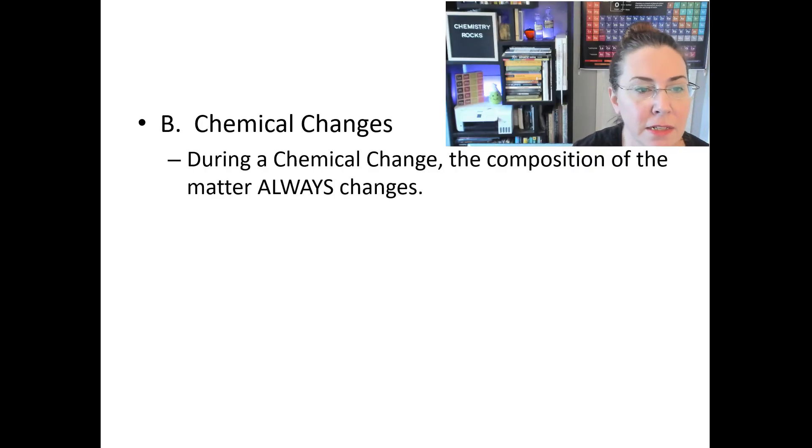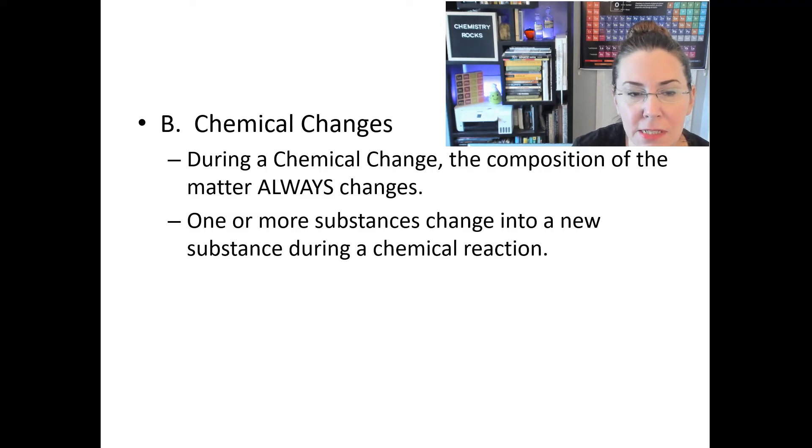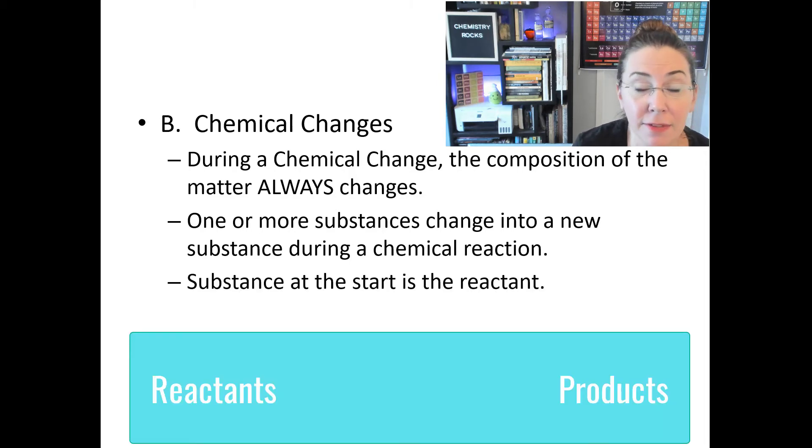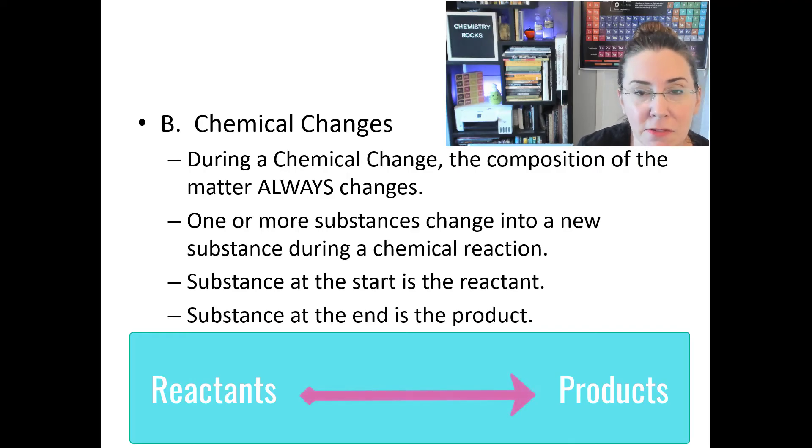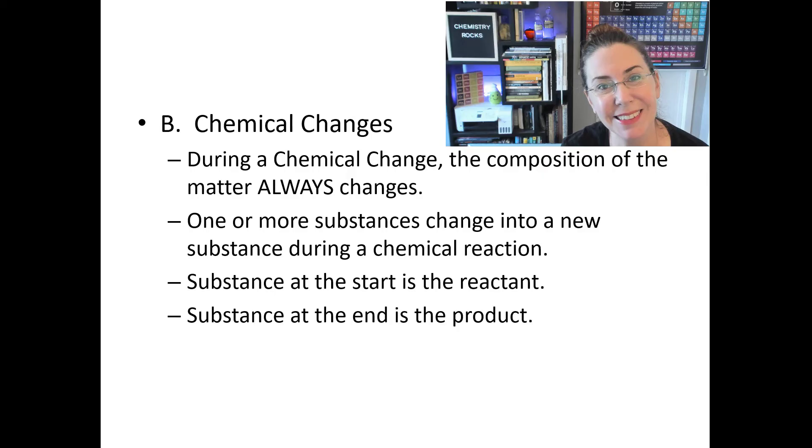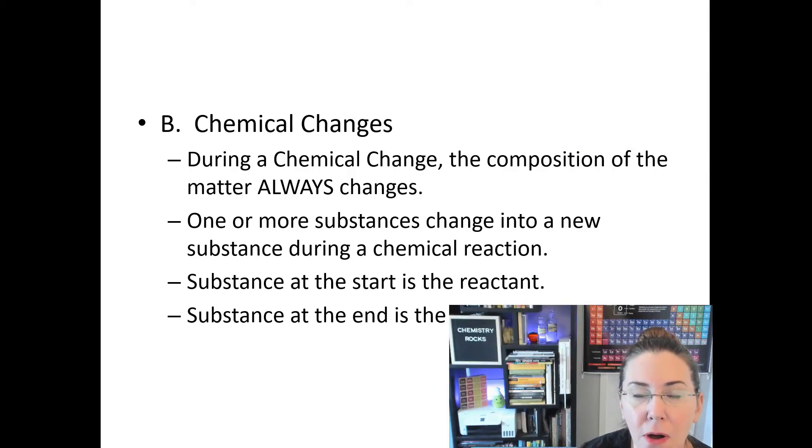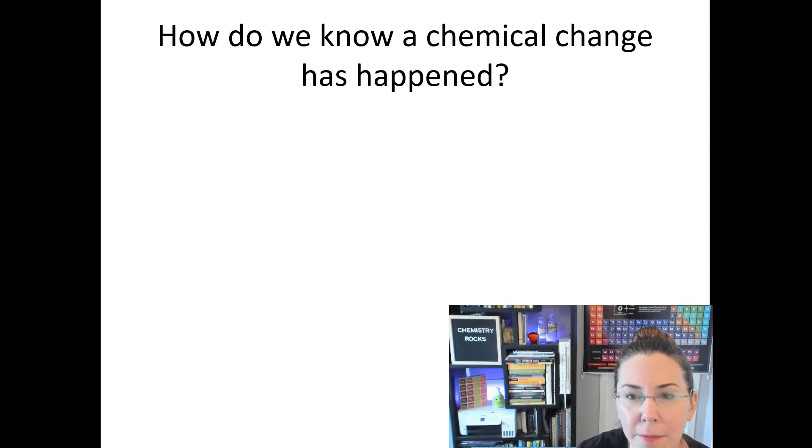Chemical changes, on the other hand, are very different from physical changes. During a chemical change, the composition of our matter always changes. One or more substances here are going to change into a new substance during a chemical reaction. Our substance that we have at the start is called our reactant, and our substance that we have at the end of this process is called a product. When we generally write this as a formula, we would think of it as our reactants yield, that's what the arrow means, our product. Now it's kind of like a recipe. All your ingredients are your reactants. The thing you get at the end that you're going to eat, well, that would be your product.